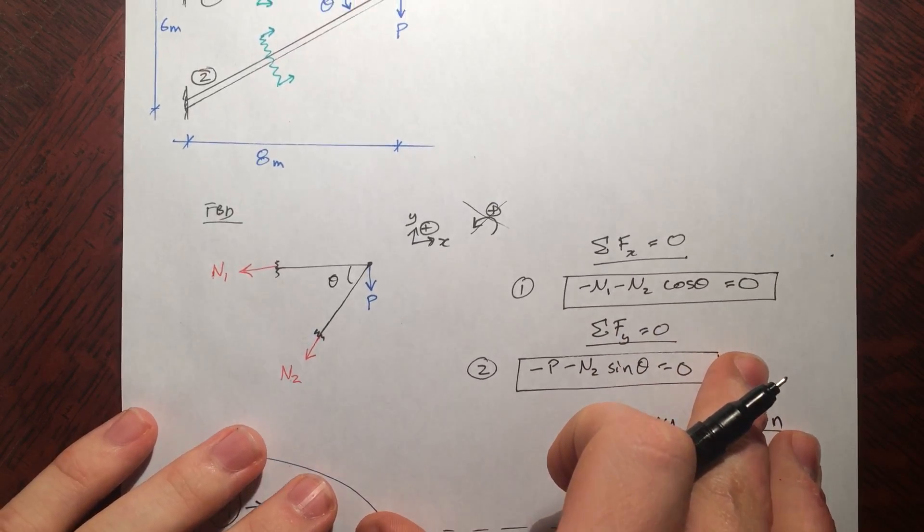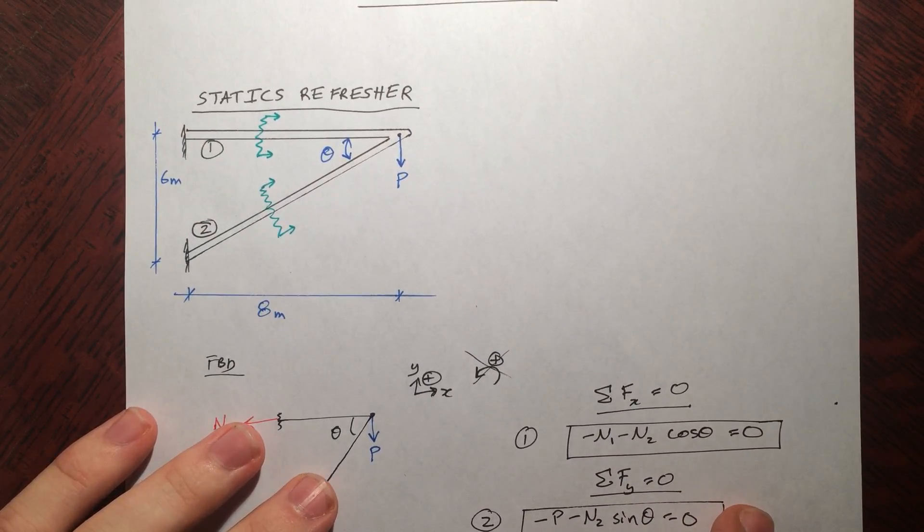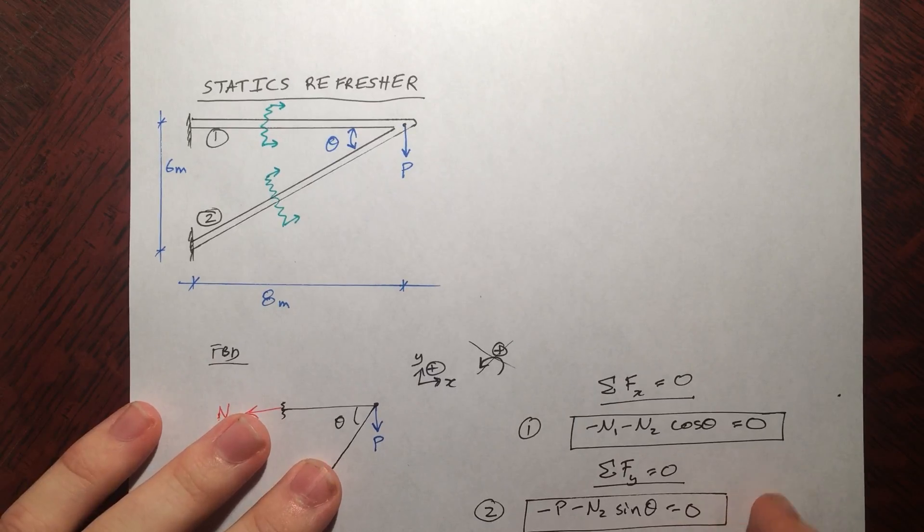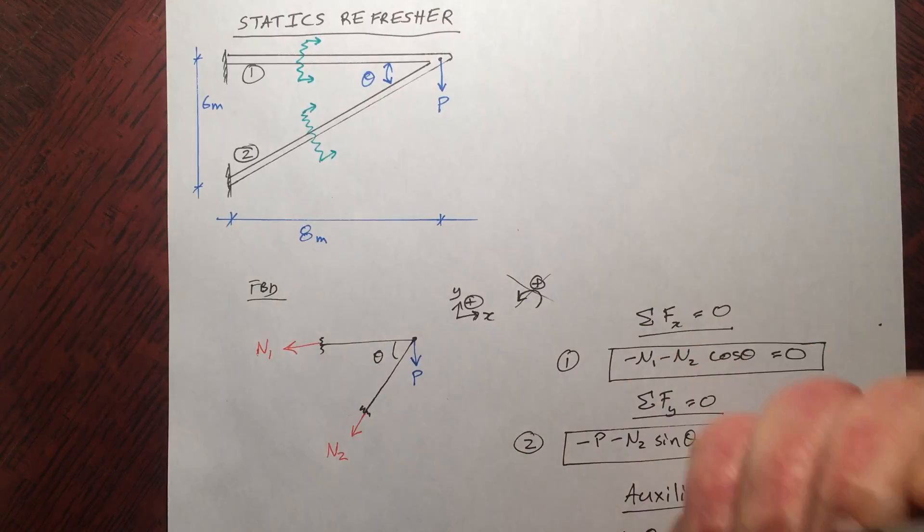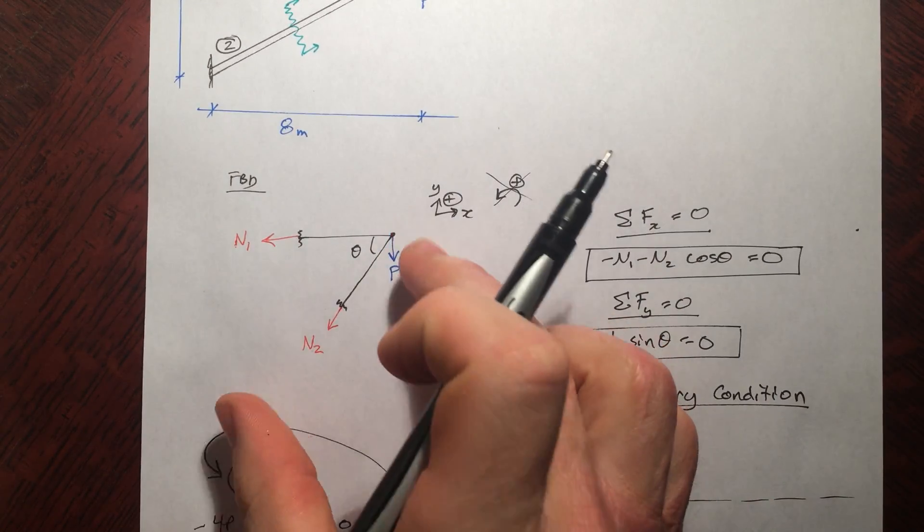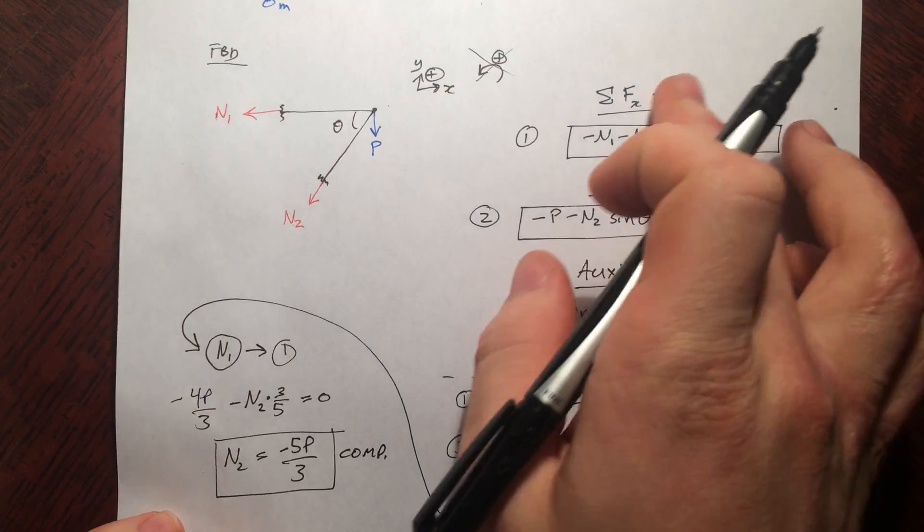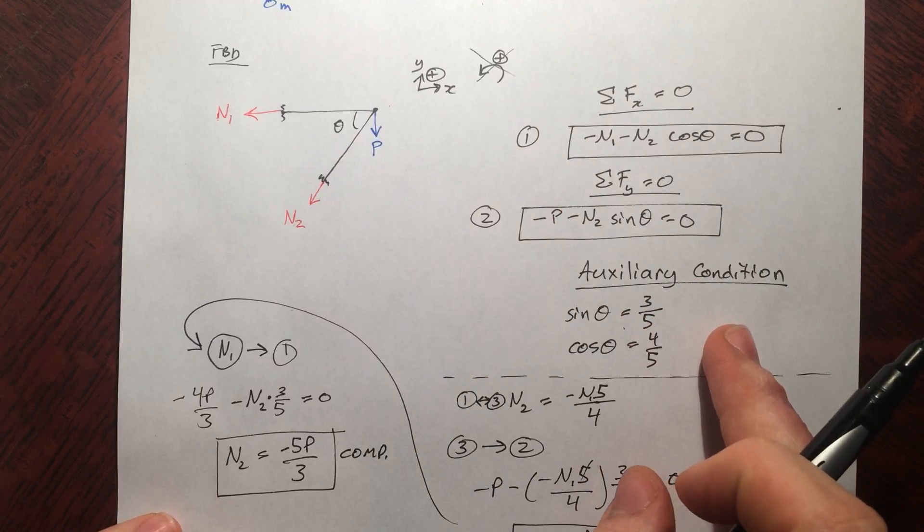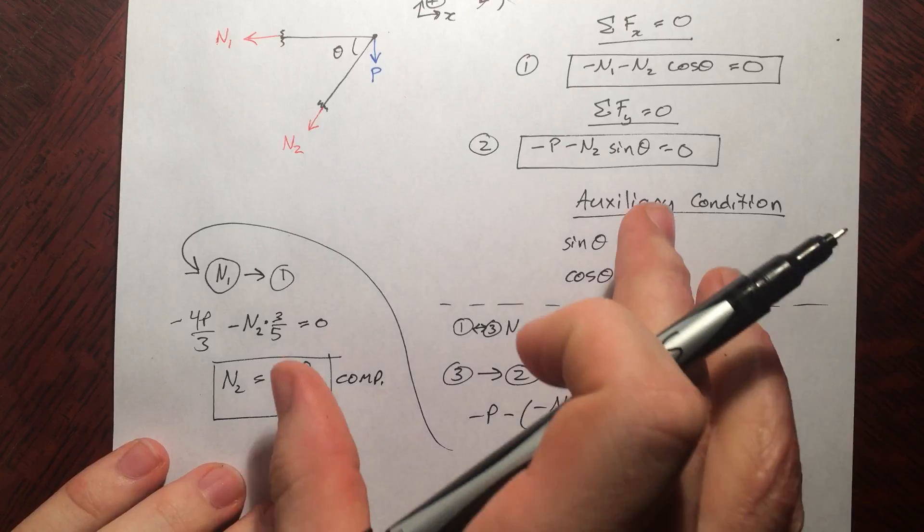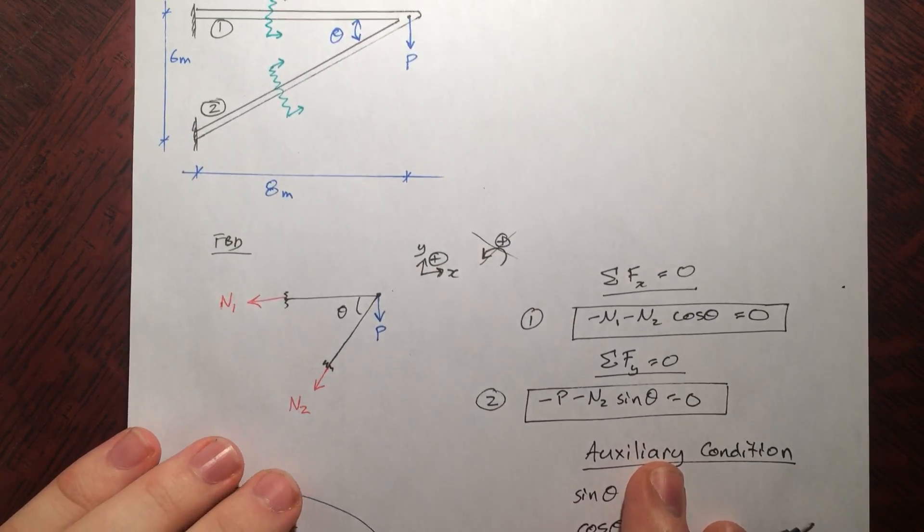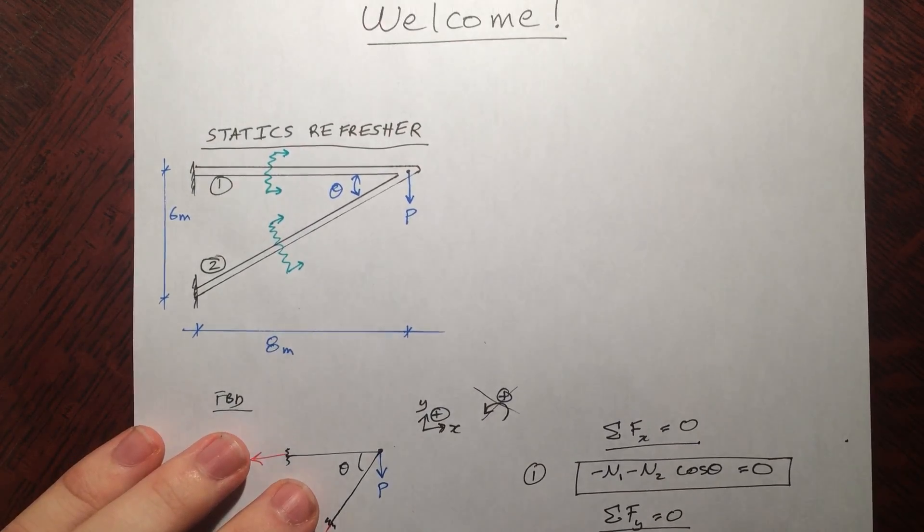Alright. There's a bit of a statics refresher for you guys. So a quick review of what we did. We drew our picture in order to find the internal forces. We exposed them by making cuts. We drew a free body diagram. We labeled our directions clearly. Summed up our forces. Solved for some auxiliary conditions. And did some algebra to find the answer. Alright, you guys. Thanks so much for watching. And I'll see you in the rest of my videos on mechanics of materials.